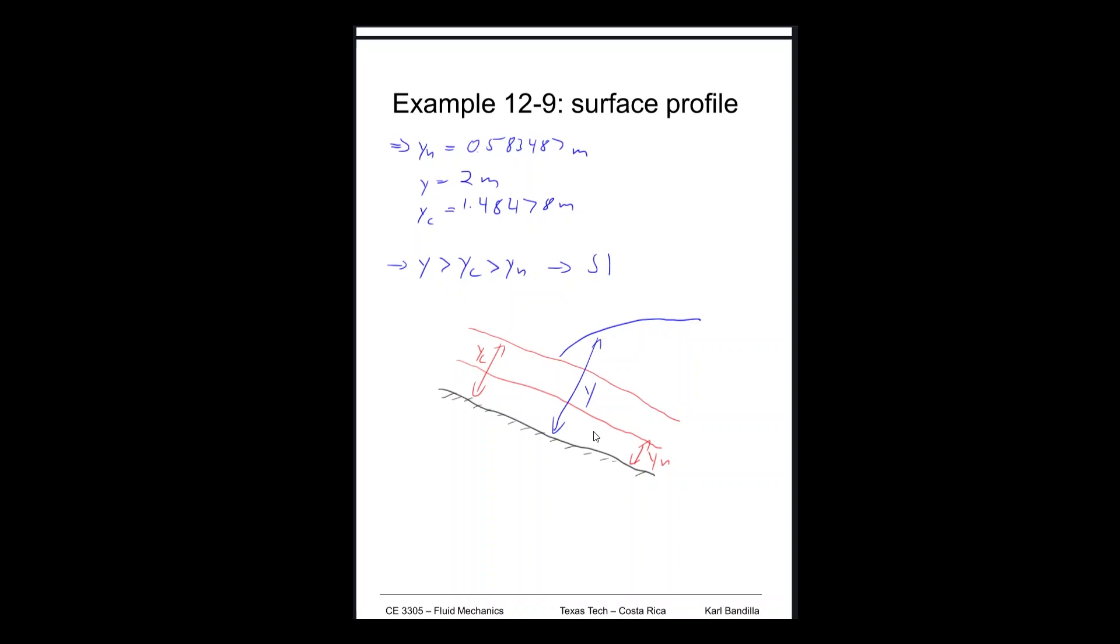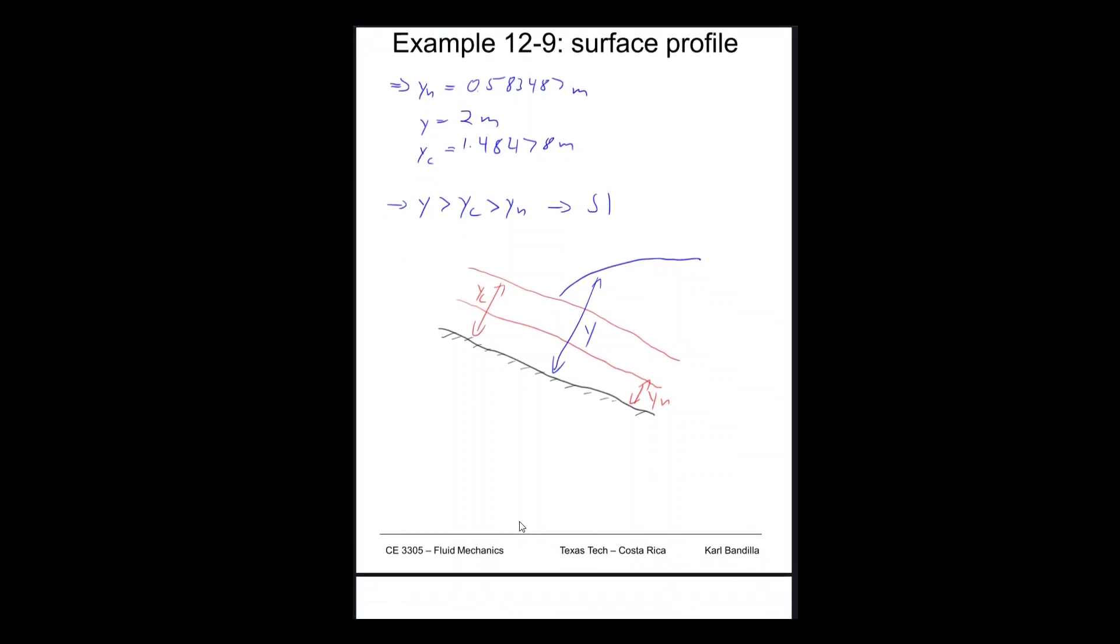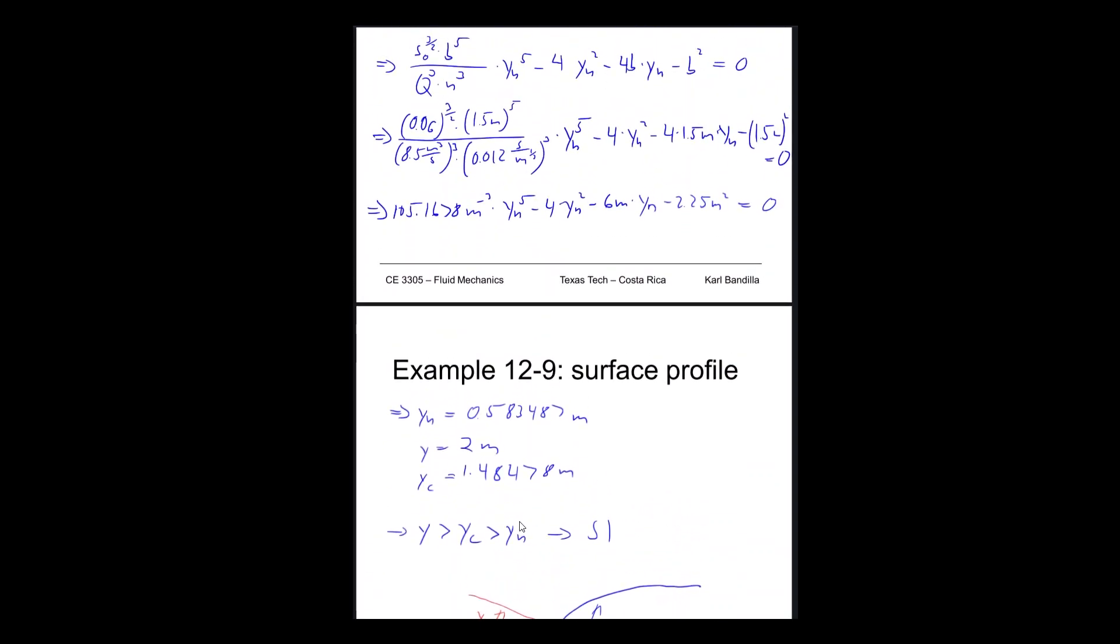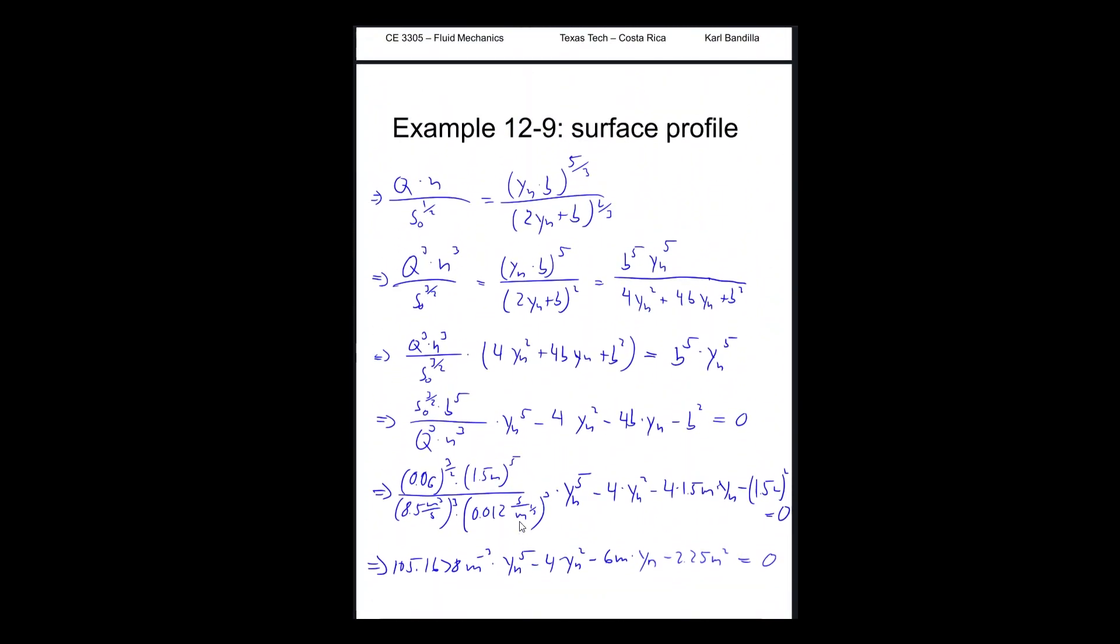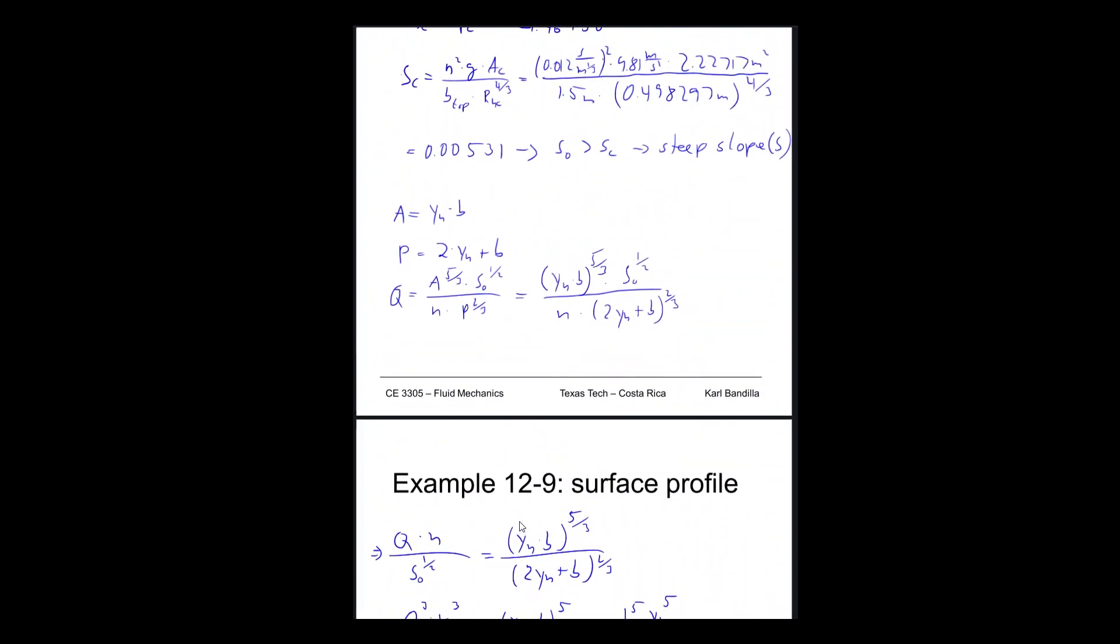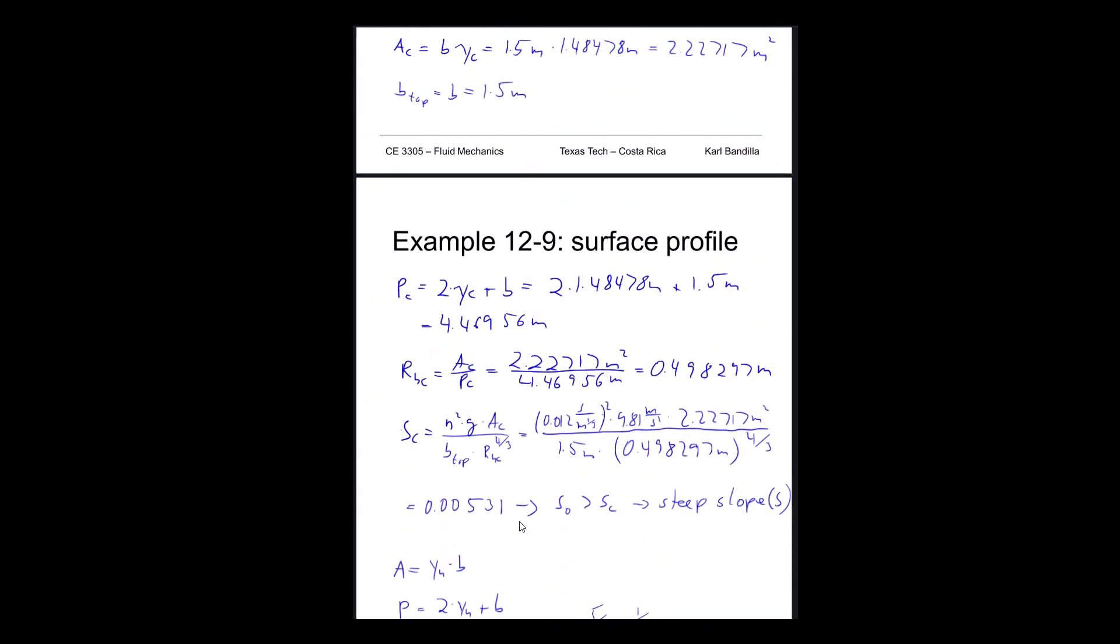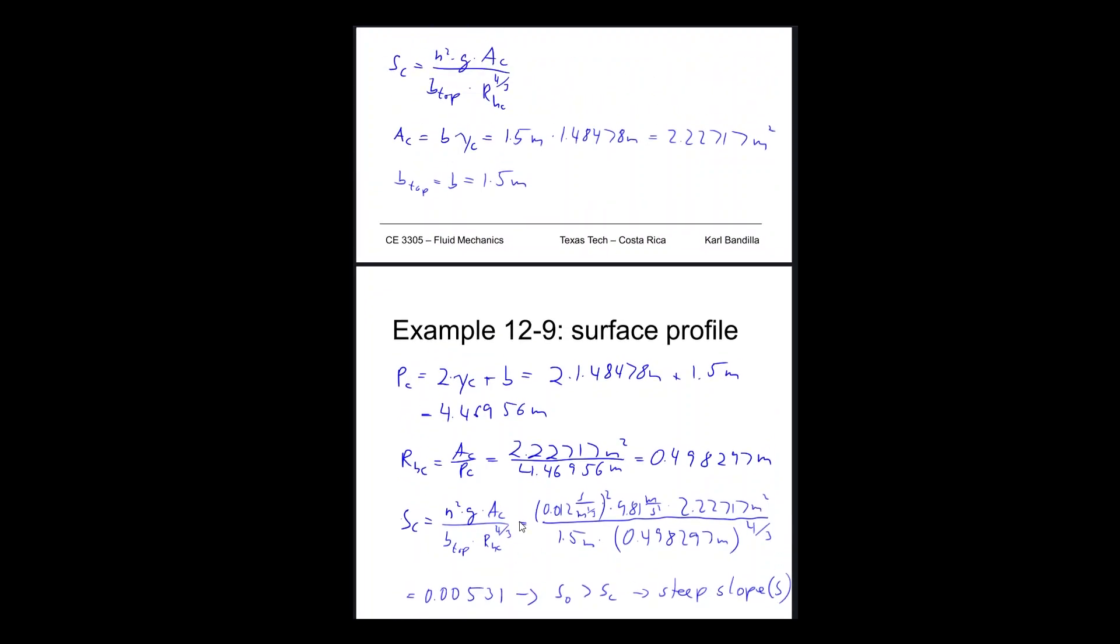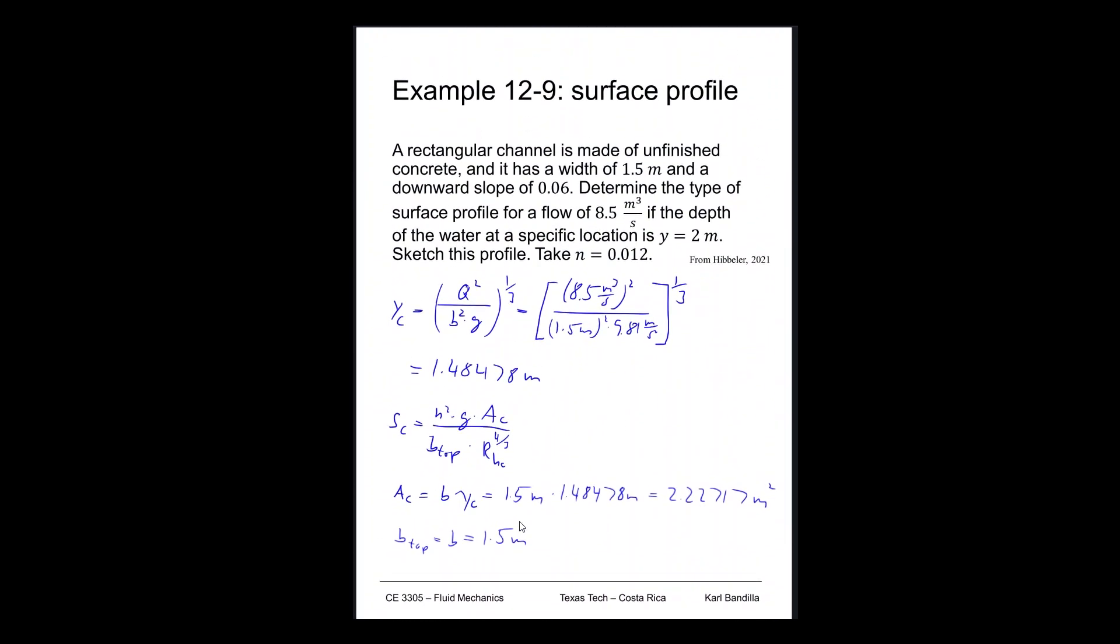So this is how we get our surface profile. So we went through. We calculated what the normal depth is. We calculated what the critical depth is. We calculated what the critical slope is. And based on all that, we could find the surface profile for example 12-9.